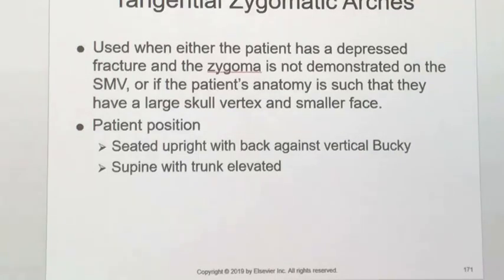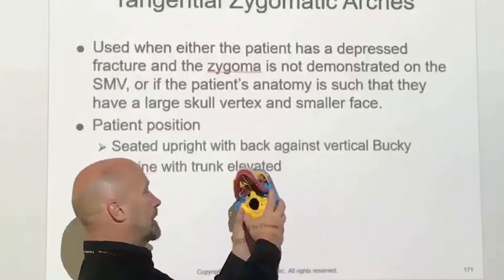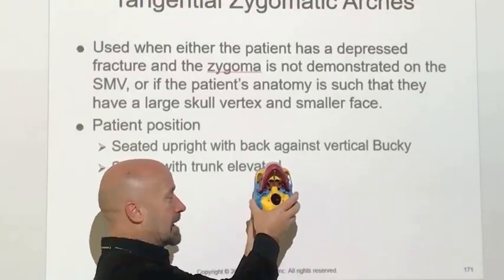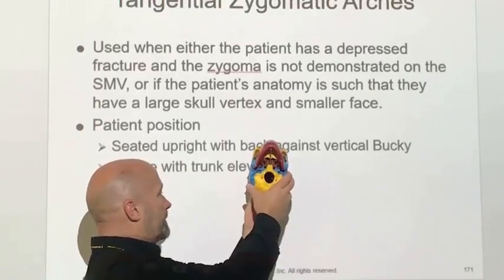Adjust the position of the patient's head so the IOML is as parallel as possible to the plane of the image receptor. Then — and this is where it goes off the rails — rotate the midsagittal plane of the head approximately 15 degrees toward the side being examined, then tilt the top of the head approximately 15 degrees away from the side being examined. The point of reference changes about midway through. What it's saying is to position like an SMV.